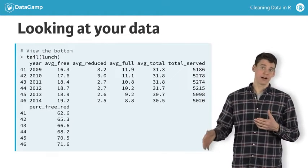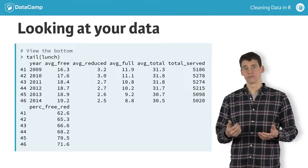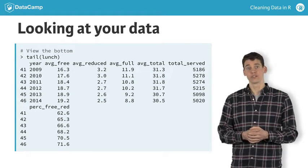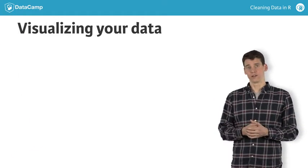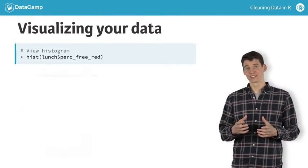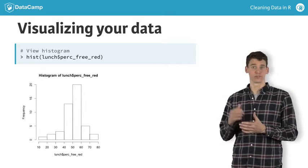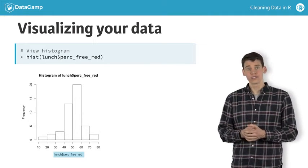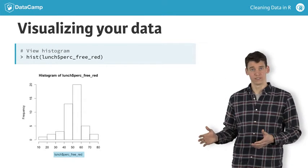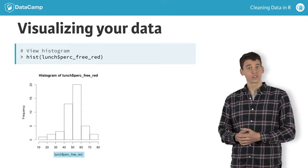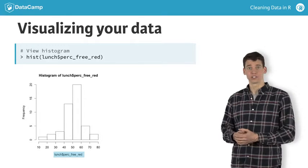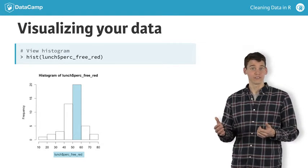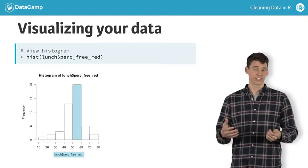Viewing the top and bottom of your data only gets you so far. Sometimes the easiest way to identify issues with the data is to plot them. Here, we use hist to plot a histogram of the percent free and reduced lunch column, which quickly gives us a sense of the distribution of this variable. It looks like the value falls between 50 and 60 for 20 out of the 46 years contained in the lunch data set.